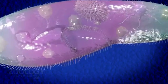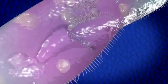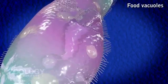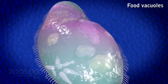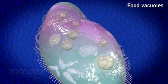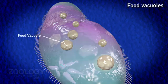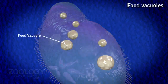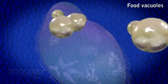Food Vacuoles. Plenty of non-contractile food vacuoles can be seen moving with the streaming endoplasm. They differ in shape and size according to the nature of ingested food particles, but mostly they are rounded in form.